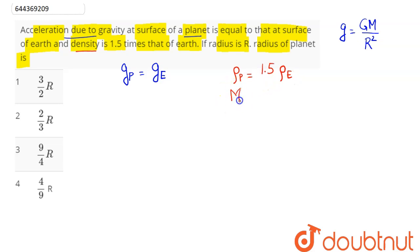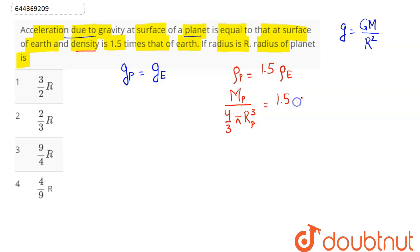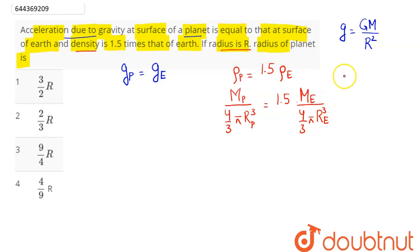Now density equals mass of planet divided by volume. The volume of the planet is 4/3 π rp cubed, which equals 1.5 times mass of Earth divided by 4/3 π re cubed. The question asks: if the radius of Earth is given as r, what will be the radius of the planet?